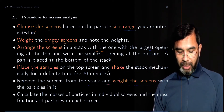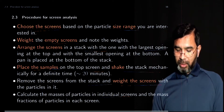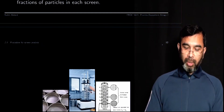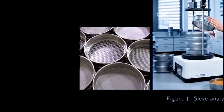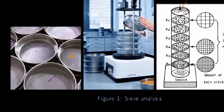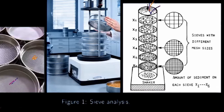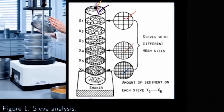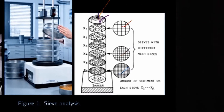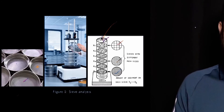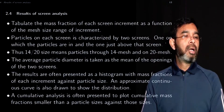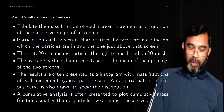After shaking, remove each screen and measure the weight of the screen with the particles on it. Using the previously recorded weight of the empty screens, you calculate the mass of particles retained on each screen. As shown in the figure, screens with larger openings are at the top and smaller openings lower down. When shaken, particles distribute themselves across different screens according to their size.